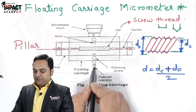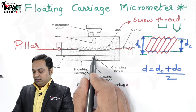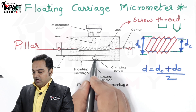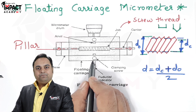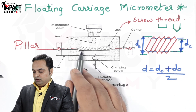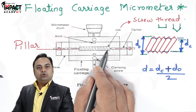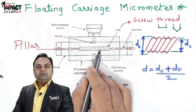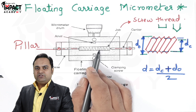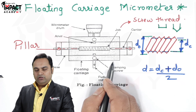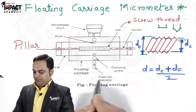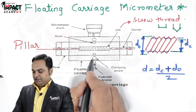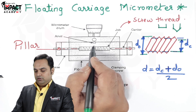The fiducial indicator tells us the amount of pressure we are applying in order to clamp the screw. The screw thread should not get damaged when we are using it on this machine, so the fiducial indicator indicates the amount of pressure being applied.